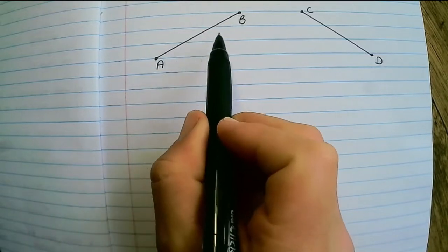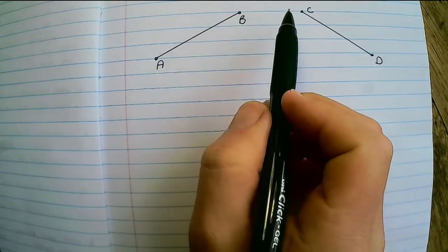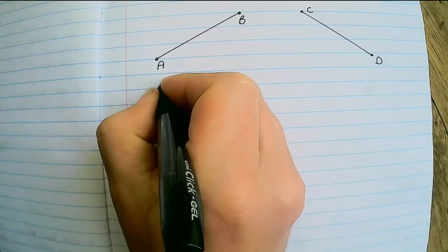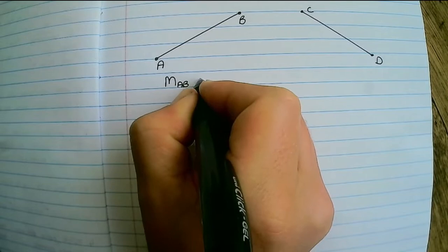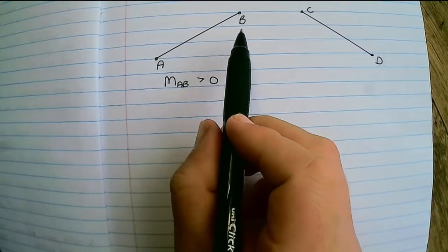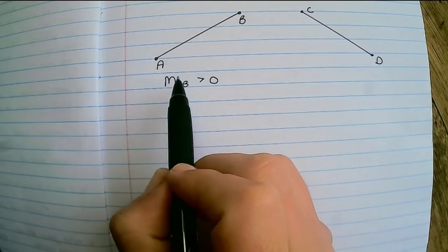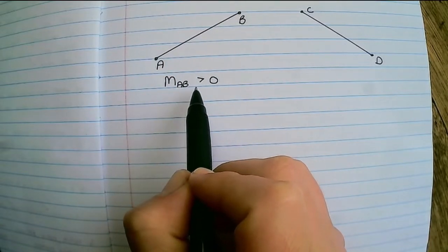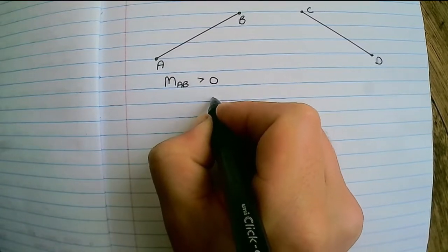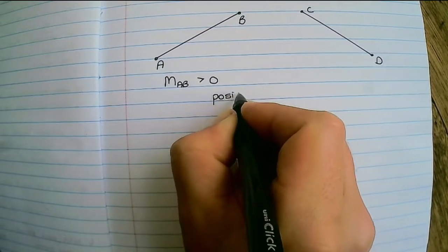the gradients of these two lines AB and CD. If I look at the gradient of AB, I would say that it is bigger than zero. Regardless of what the values and coordinates are, this gradient would be bigger than zero. Another word for bigger than zero is the gradient would be positive.